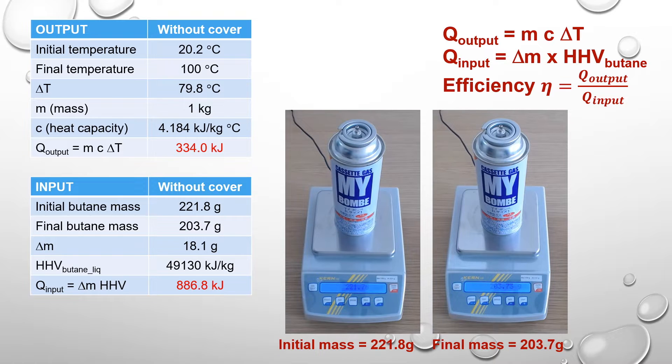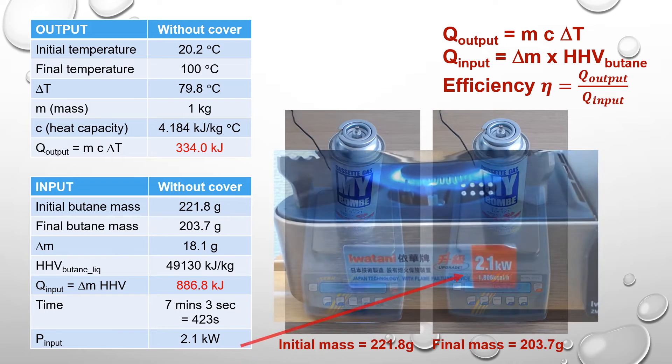Actually, this number is reasonable. As we have used the butane gas for 423 seconds, the input power of the gas stove can be estimated to be 2.1 kW, which is consistent with the specification of the stove.